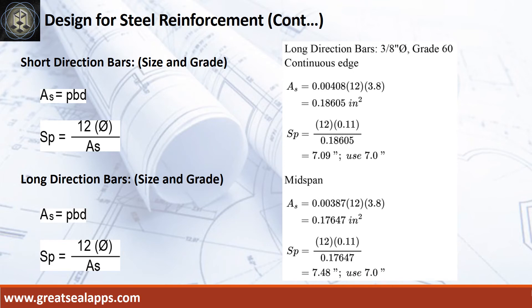At long direction, given continuous edge rho equals 0.00408, b equals 12 inches, and d equals 3.8 inches: area of steel is 0.18605 square inches, and spacing for 3/8-inch diameter bar is 7 inches on center. Given mid-span rho equals 0.00387, b equals 12 inches, and d equals 3.8 inches: area of steel is 0.17647 square inches, and spacing for 3/8-inch diameter bar is 7 inches on center.